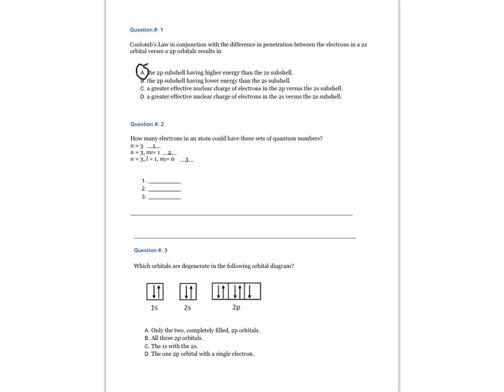Question number two: How many electrons in an atom could have these sets of quantum numbers? n equals 3, n equals 3, m sub l equals 1, n equals 3, l equals 1, m sub l equals 0.